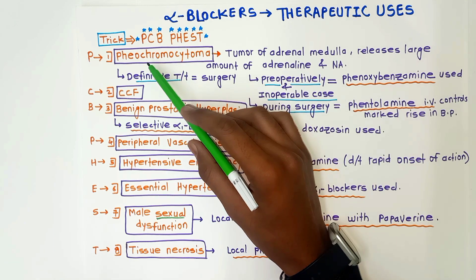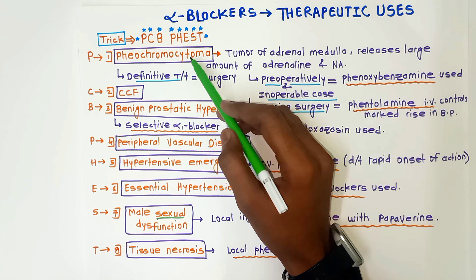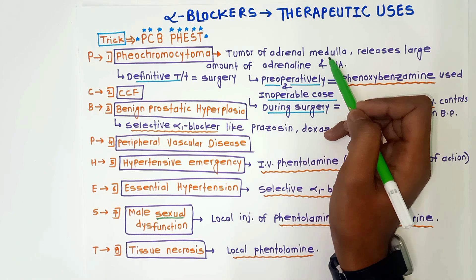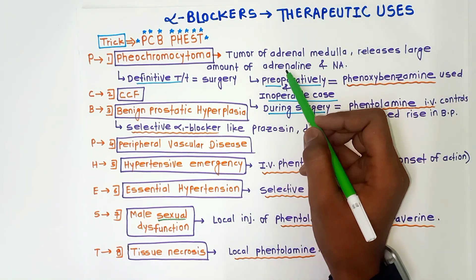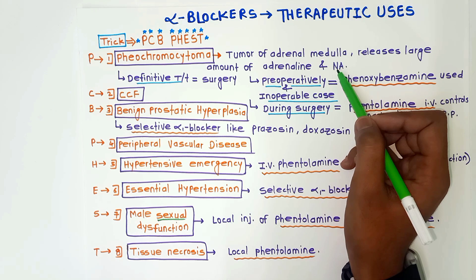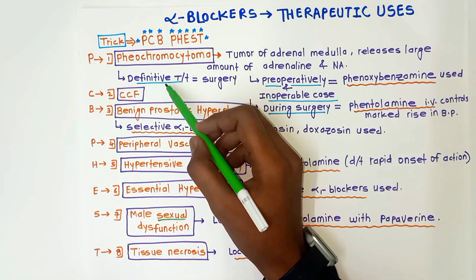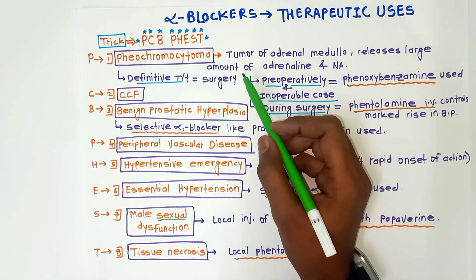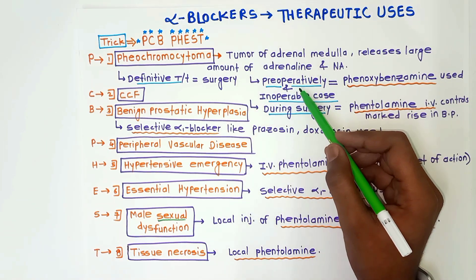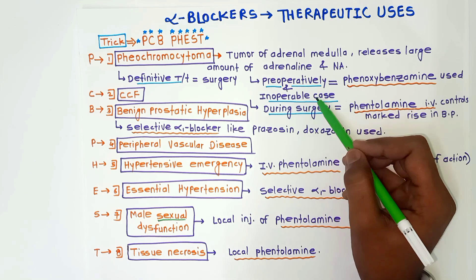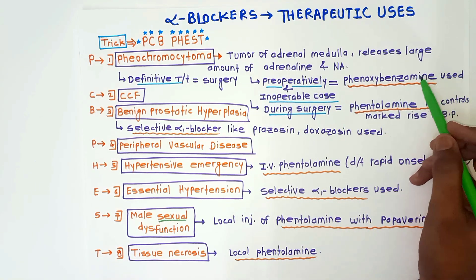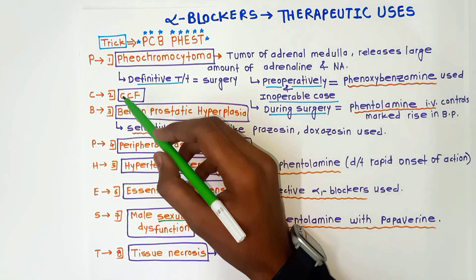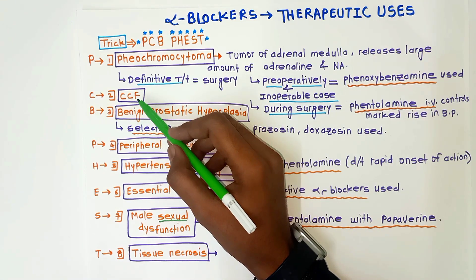First is pheochromocytoma. What is pheochromocytoma? It is a tumor of the adrenal medulla that releases large amounts of adrenaline and noradrenaline on activation. The definitive treatment is surgical removal of the tumor, but in preoperative or inoperable cases, phenoxybenzamine is used — it is a non-equilibrium type alpha blocker.